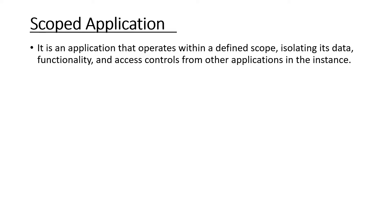In simple terms, when you create a scope for your application, everything you deal with — tables, configuration items, business rules, client scripts, modules, access controls — is controlled inside your scope and isolated from other applications and their scopes.